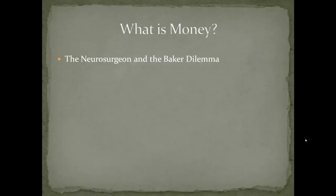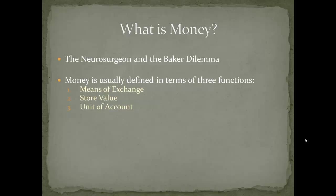Imagine if everybody, in addition to being an engineer, mathematician, or rocket scientist, also had to be a farmer — that would cause problems. So we said: how about we develop something that lets the neurosurgeon be a neurosurgeon but also prevents him from starving to death? That's essentially money. Money is usually defined in terms of three functions: first, a means of exchange; second, a store of value; and third, a unit of account.